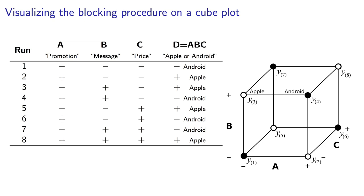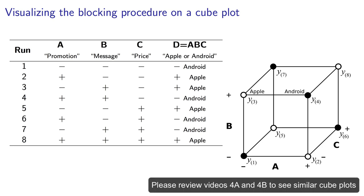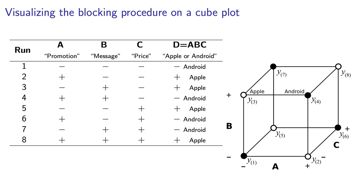Let's visualize this on a cube plot. The closed circles are the Android users, and the open circles are the Apple users. Doesn't this plot look familiar to you? Now let's go take a look at the reasons for assigning the experiments in this way.